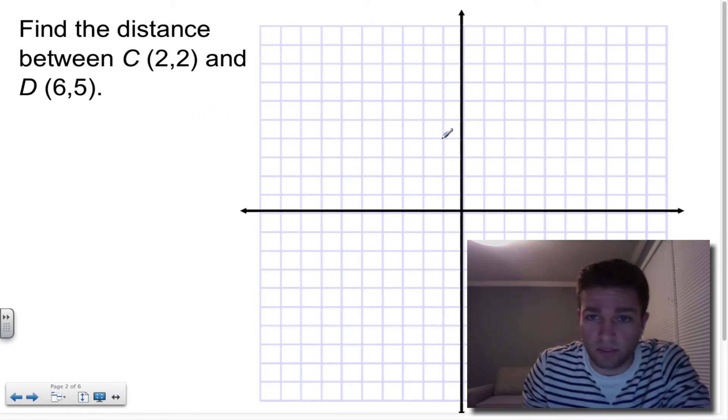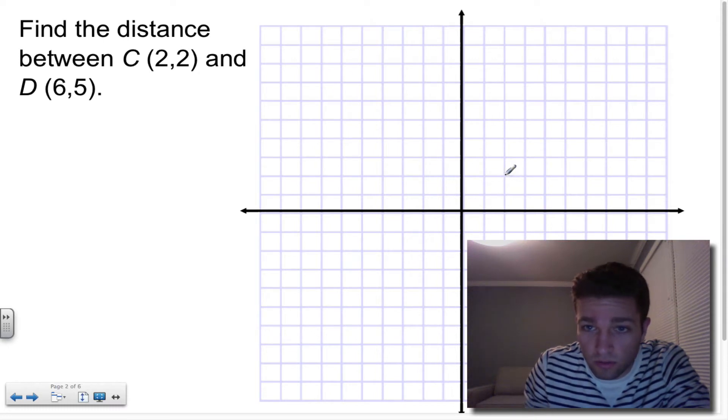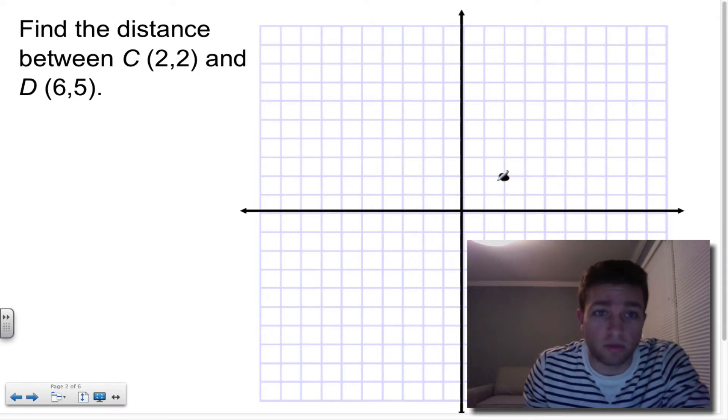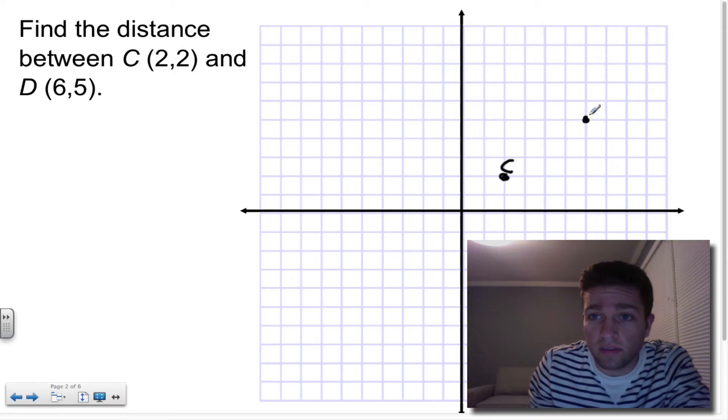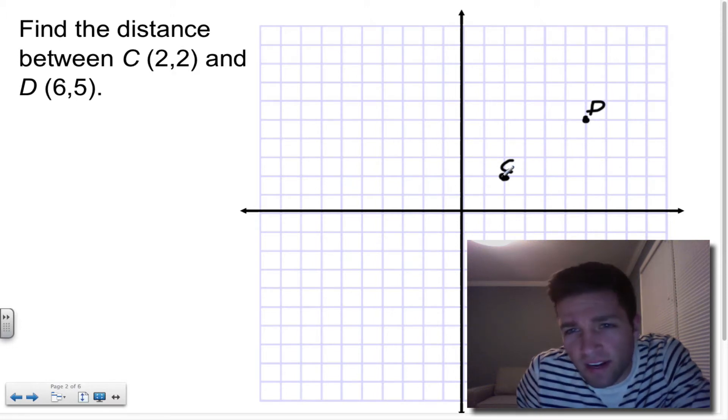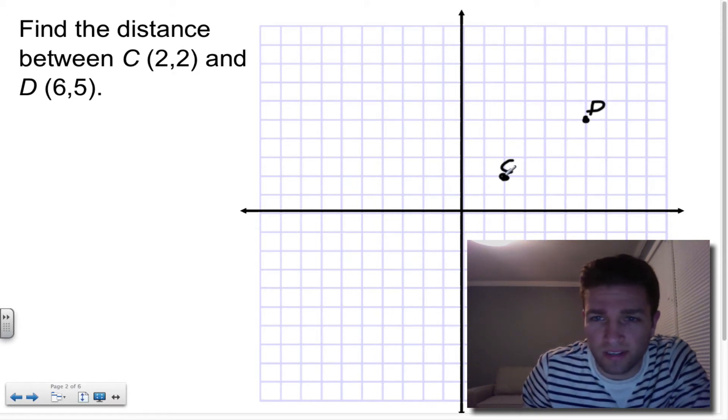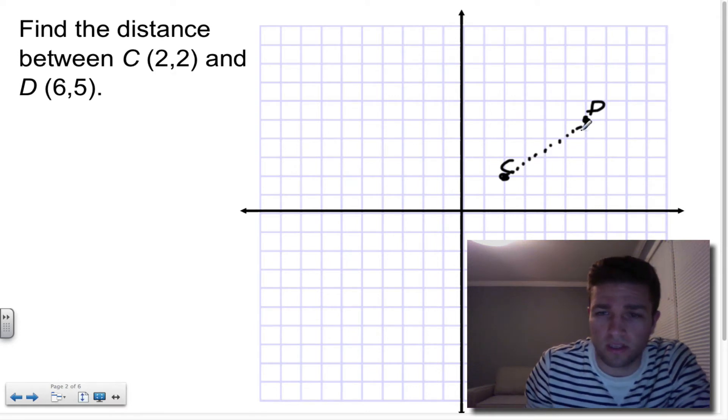So what happens when you've got a question like this? Find the distance between point C, which is located at 2, 2, and point D, which is located at 6, 5. We've got these two points. How can I find the distance from here up to here?